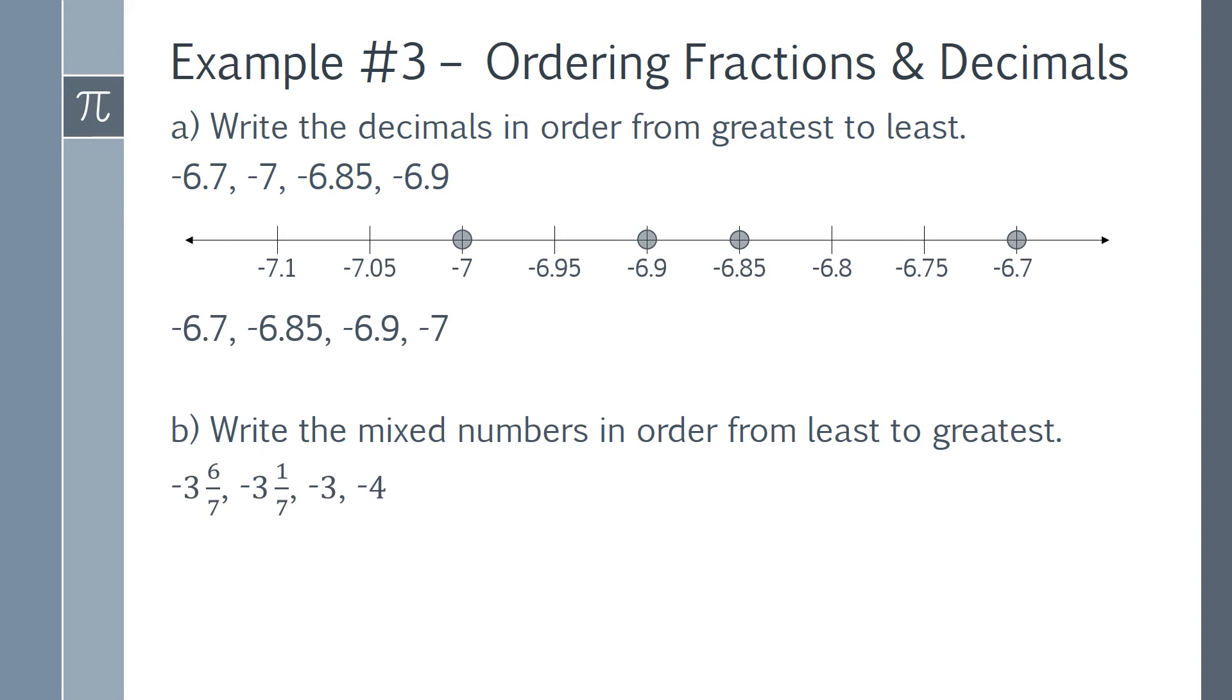Now for Part B. Write the mixed numbers in order from least to greatest. This time we have negative 3 and 6 sevenths, negative 3 and 1 seventh, negative 3, and negative 4.